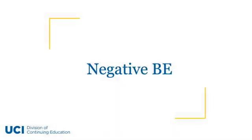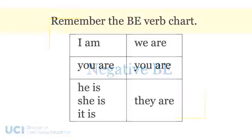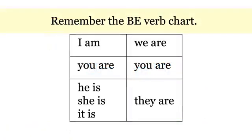Negative Be. This lesson is about how to form Be in the negative in the simple present. Remember the Be verb chart — there are three forms: am, is, and are. And the negative of Be is simple.